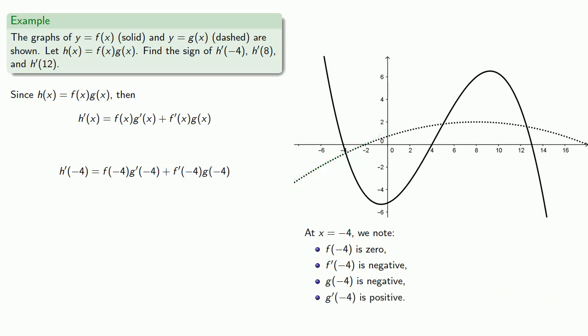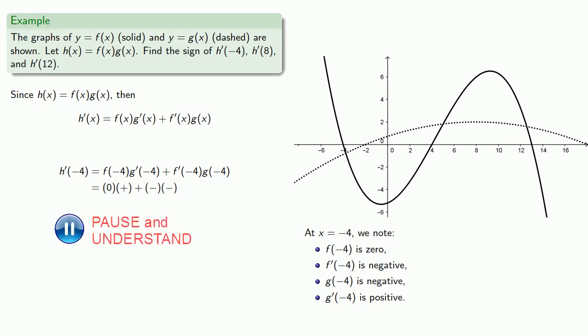So h prime of negative 4 is 0 times a positive number plus a negative number times a negative number. Zero times a positive number is just 0, and the product of two negatives is positive, so h prime of negative 4 is positive.